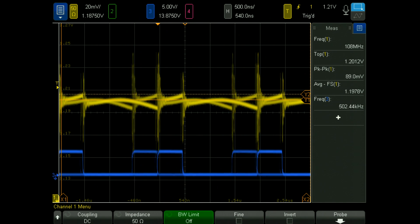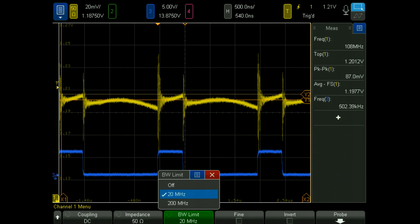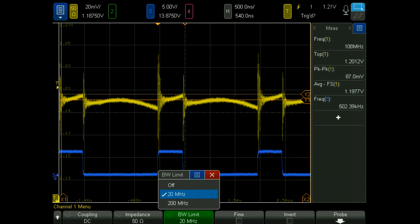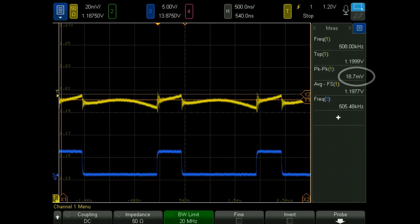For now we will limit bandwidth to 20 MHz on the scope to remove high frequency noise and provide a much clearer image of the ripple voltage. Now we measure a 18.7 millivolt peak-to-peak measurement and this will be our baseline measurement for the rest of the video.